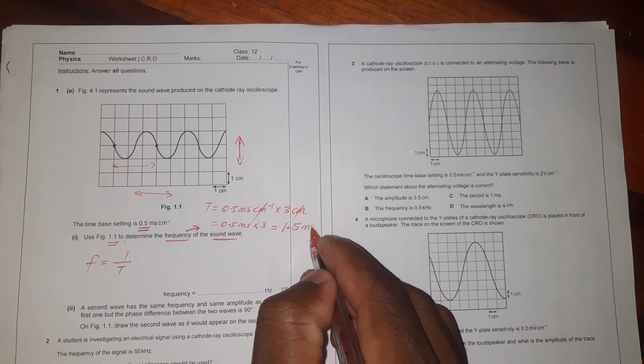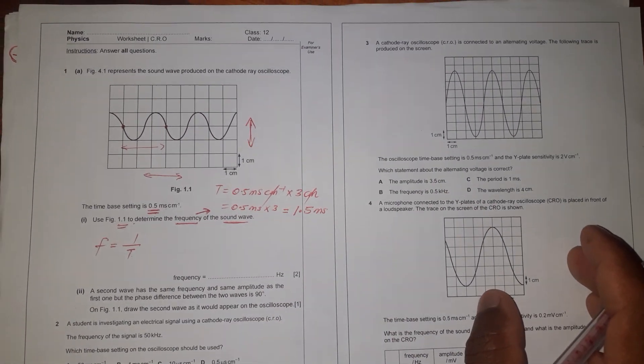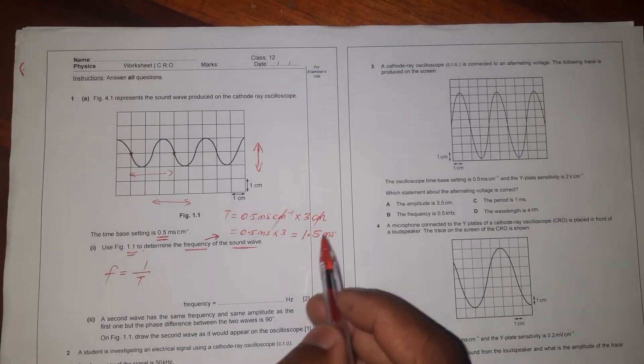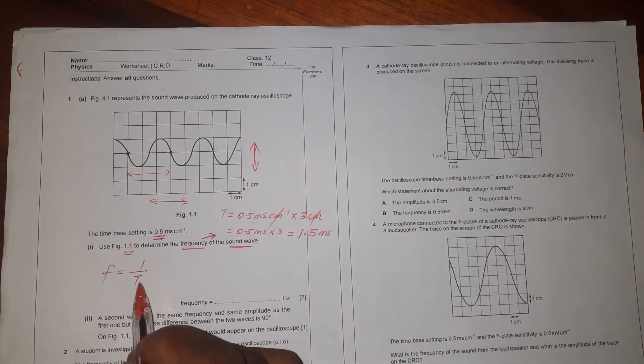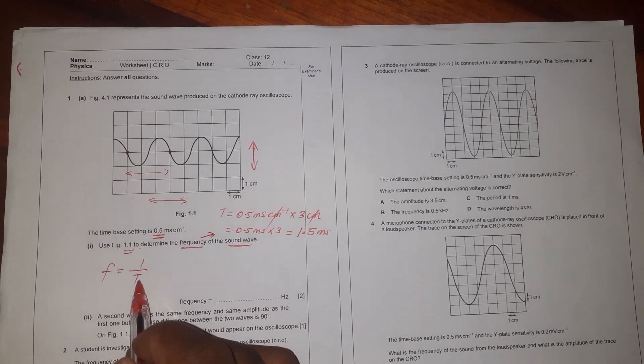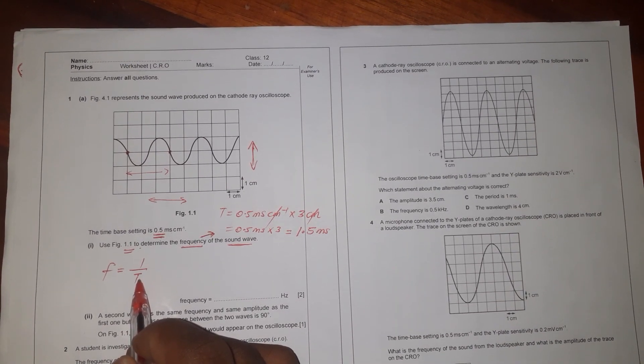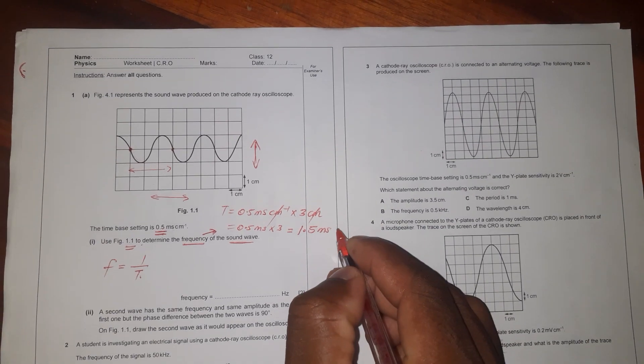But yet now I can't use this 1.5 milliseconds to substitute in the place of time, because the SI unit of time should be seconds only, not milliseconds. Therefore I can still convert that to seconds.